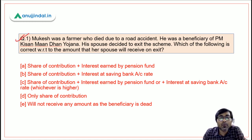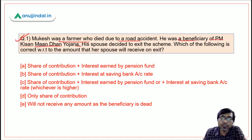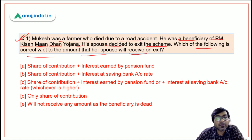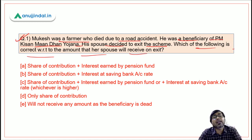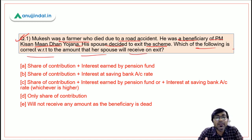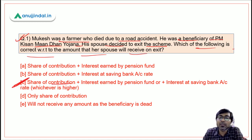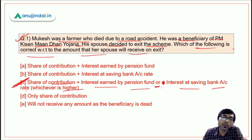Question 1: Mukesh was a farmer who died in a road accident. He was a beneficiary of PM Kisan Mandhan Yojana. His spouse decided to exit the scheme. What amount will his spouse receive? The correct answer is option C — share of contribution plus interest earned by the pension fund or interest at savings bank account rate, whichever is higher.